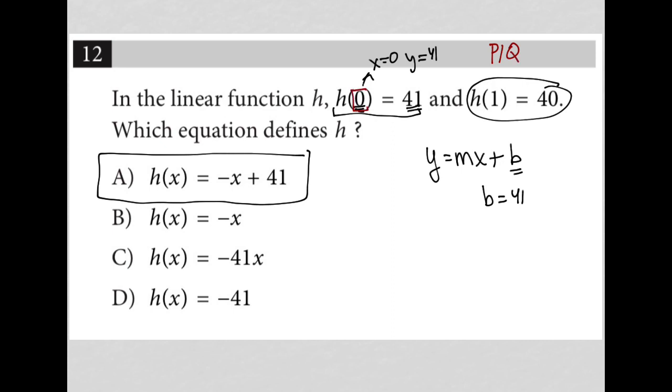So here, when x is 0, I do get 41. Here, when x is 0, I don't get 41. Here, when x is 0, I also don't get 41. And here, when x is 0, it doesn't matter. I also don't get 41.